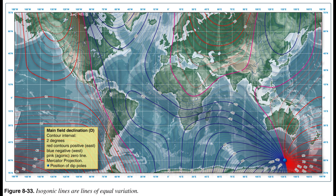Isogonic lines identify the number of degrees of variation in their area. The line that passes near Chicago is called the agonic line; anywhere along this line the two poles are aligned and there is no variation. East of this line, the magnetic north pole is to the west of the geographic north pole and a correction must be applied to a compass indication to get a true direction. Flying in the Washington, D.C. area, the variation is 10 degrees west. If a pilot wants to fly a true course of south (180 degrees), the variation must be added, resulting in a magnetic course of 190 degrees. Flying in the Los Angeles, California area, the variation is 14 degrees east; to fly a true course of 180 degrees, the pilot would subtract the variation and fly a magnetic course of 166 degrees. The variation error does not change with the heading of the aircraft; it is the same anywhere along the isogonic line.